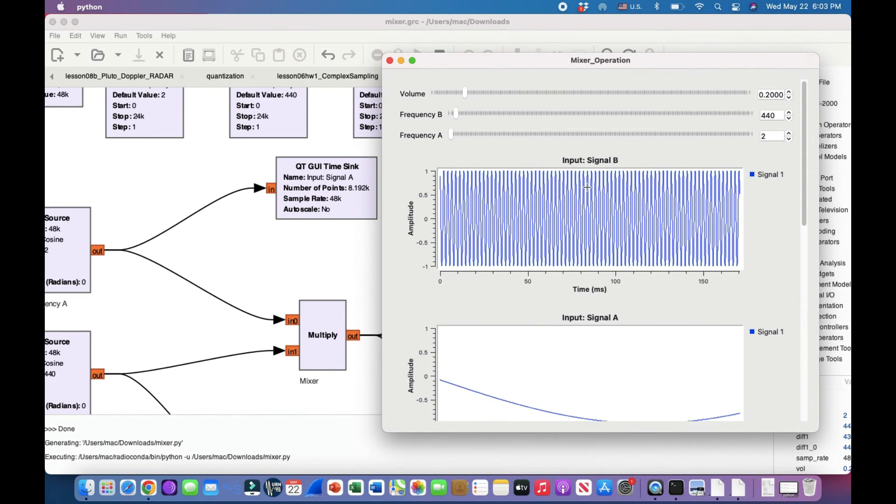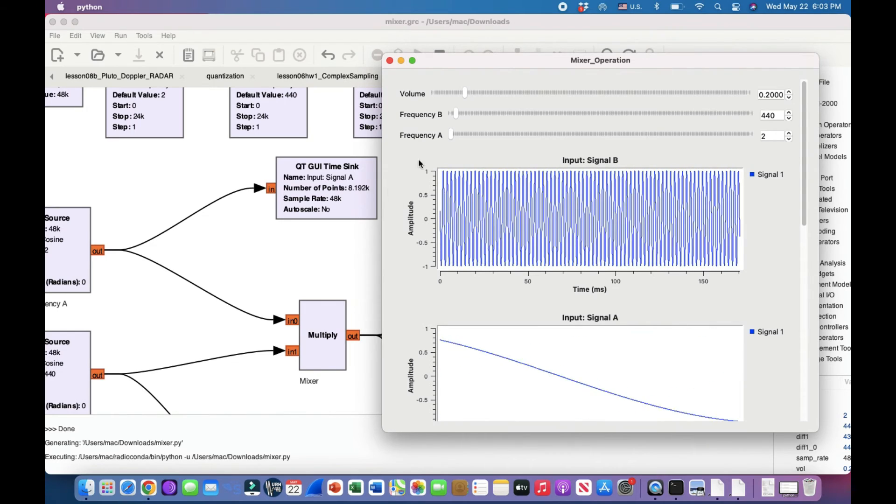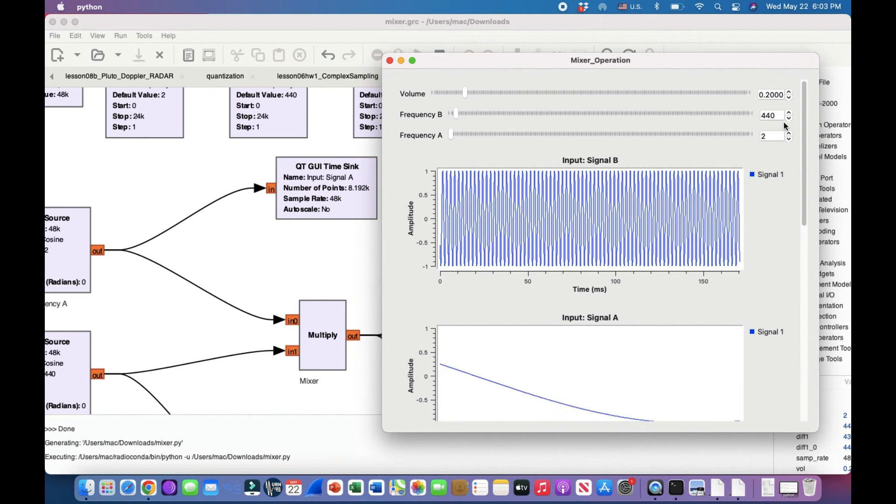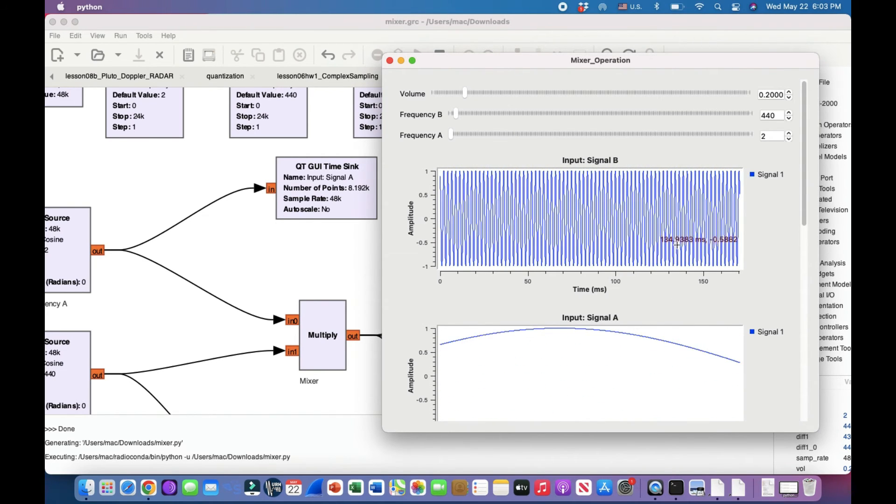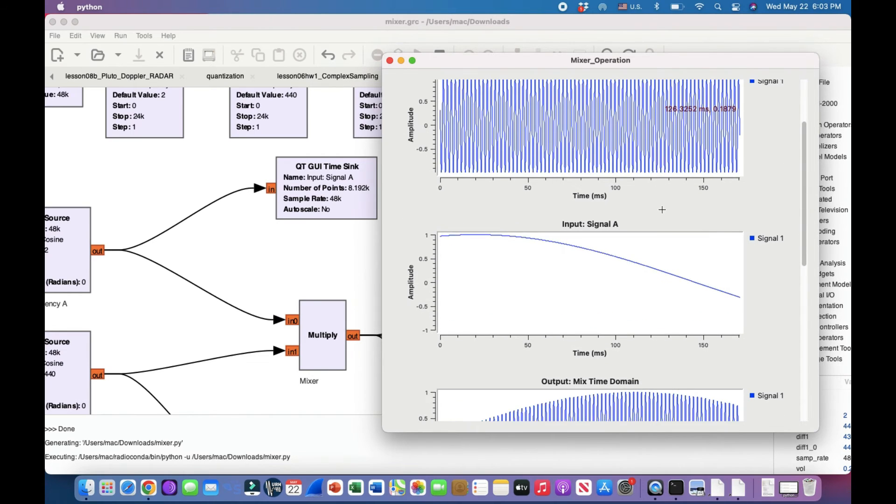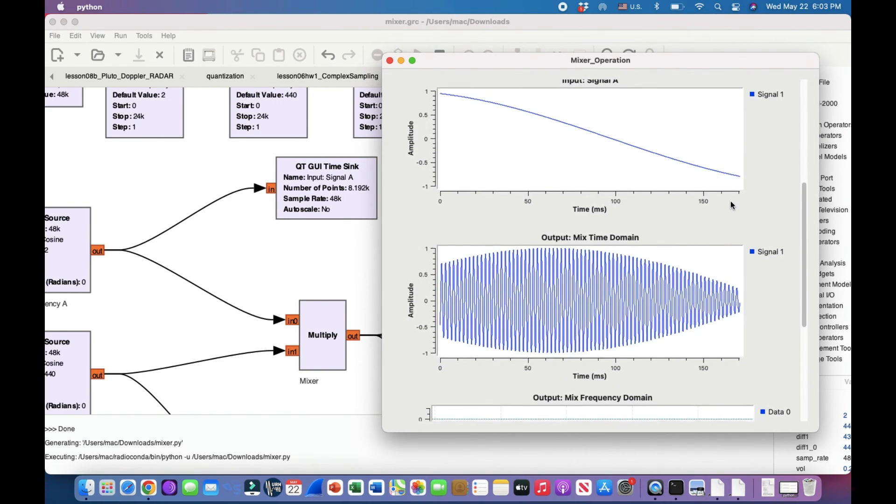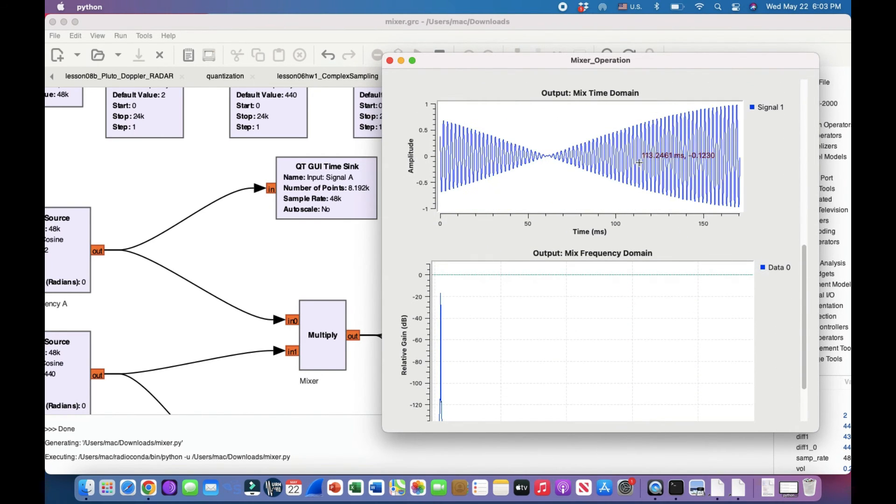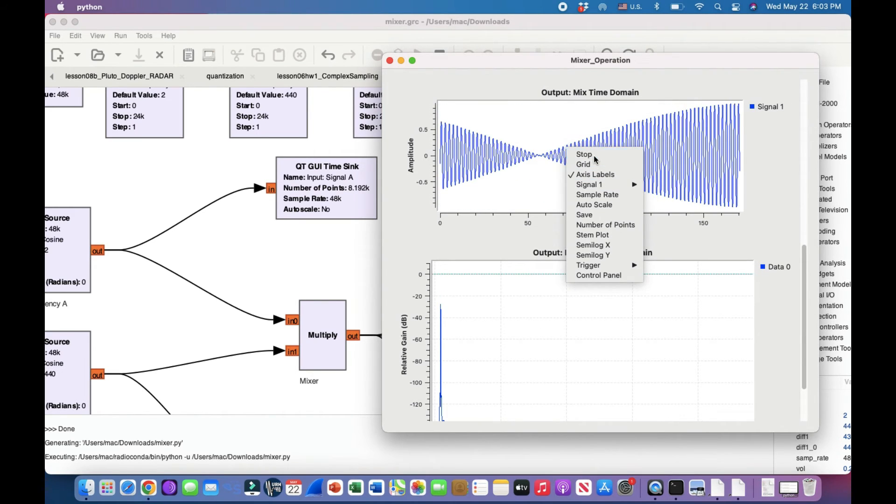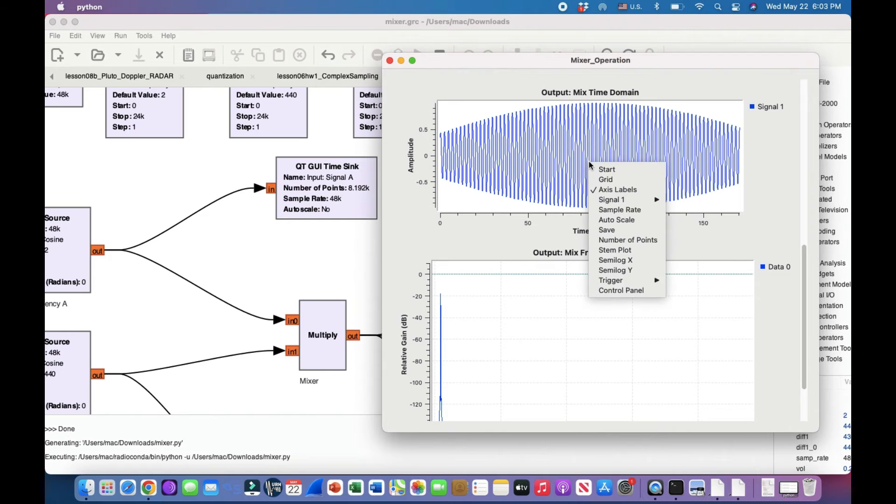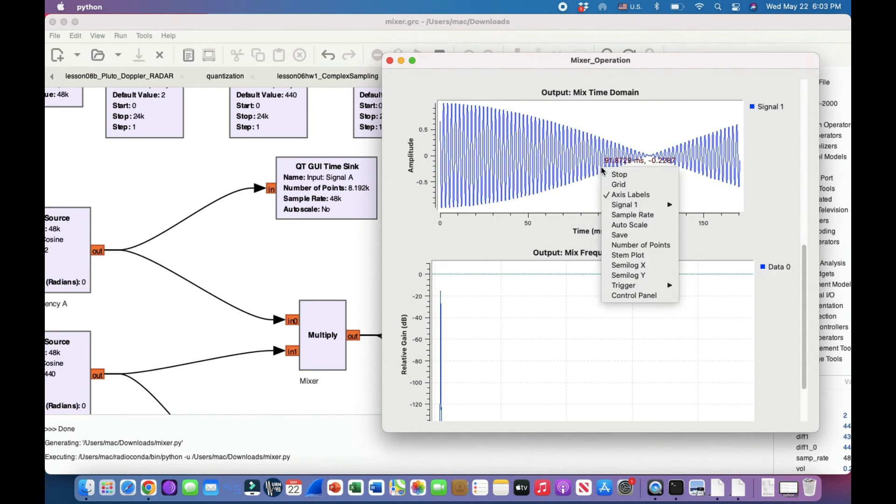As you can clearly hear, this is the modulated tone where I have my frequency B—think of it as a local oscillator—at 440 hertz, and then I have frequency A, which is 2 hertz. So this is what the 2 hertz frequency looks like. Now if I were to go up here—if you want to look at it, let me pause this for you. Let me stop this.